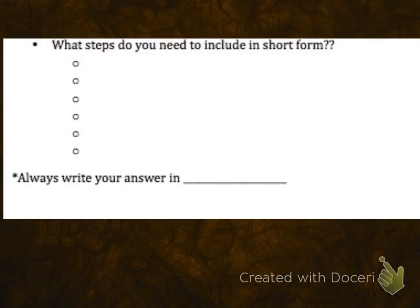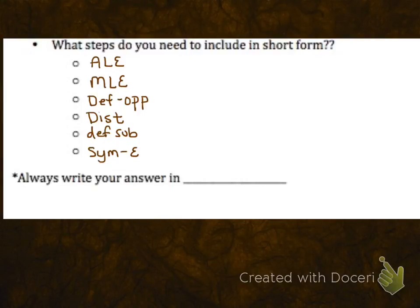So just to summarize what steps you should be showing when you are solving in short form. Again, you don't need to write the properties, but when you add something to both sides, you're applying ALE and you should show what you're adding to both sides. When you multiply something on both sides of the equation, you're applying MLE and you should show that work. If you change subtraction or change opposites, you should show that work. If you distribute, which we'll look at more in the upcoming equations, you should show what you get when you distribute. And if you switch the sides of the equation, like you want your x on the left, you should show that work as well. And then we take the time to write our solution in set braces when we're working algebraically.